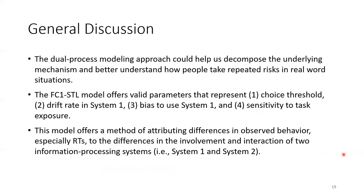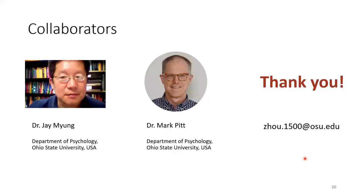In general, the dual process modeling approach could help us decompose the underlying mechanism and better understand how people take repeated risks in real-world situations. The experiment results indicate that the FC1-STL model offers valid parameters representing choice threshold, drift rate in System 1, bias to use System 1, and sensitivity to task exposure. These parameters could not be captured by any single process models, and they reveal information characterizing the two systems according to dual process theories. This model offers a method of attributing differences in observed behavior, especially RTs, to differences in the involvement and interaction of the two information processing systems. The results are part of a larger project. Lastly, I would like to thank my advisors, Dr. Mark Pitt and Dr. Jay Miao, and thank you for your attention.